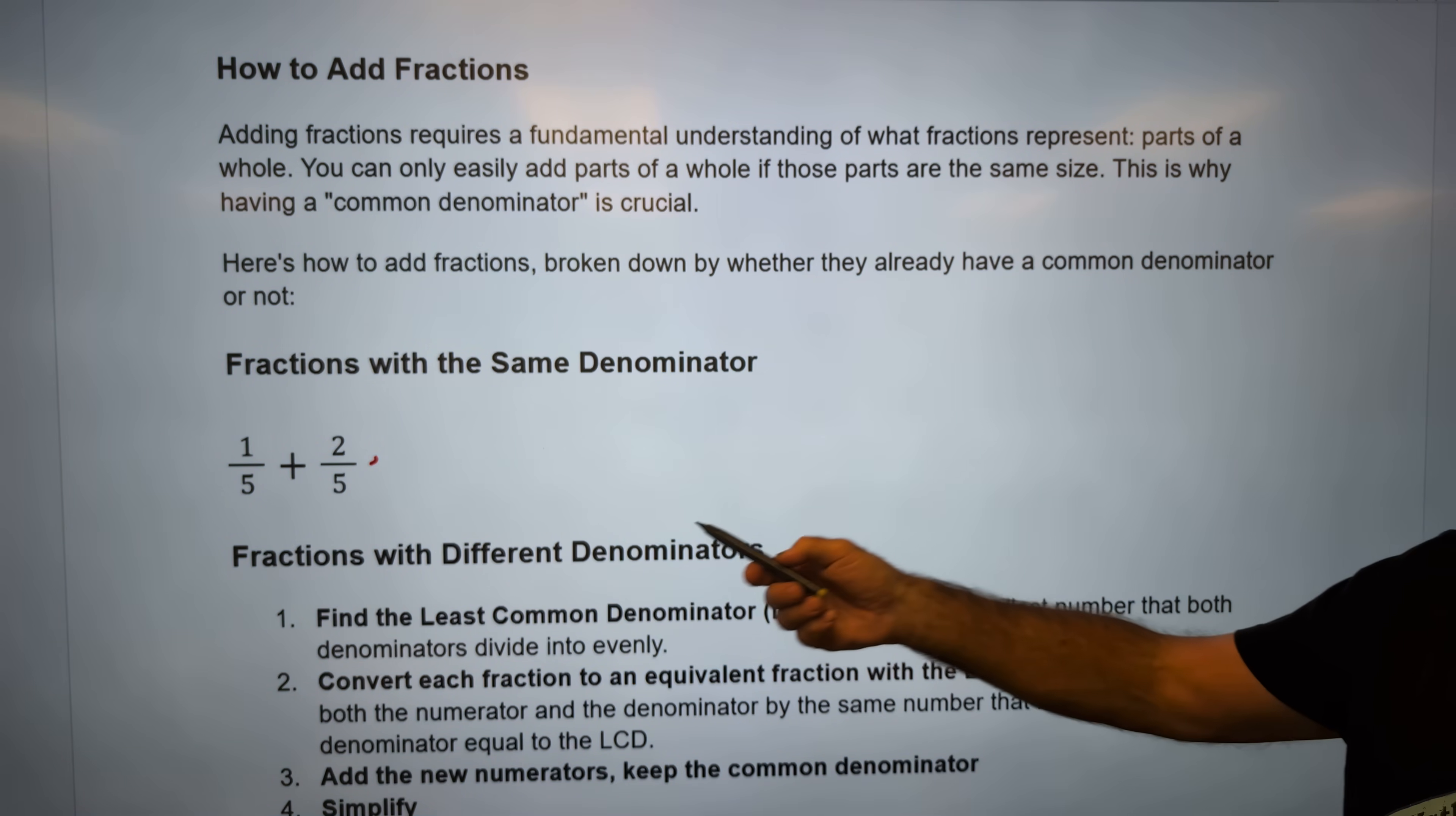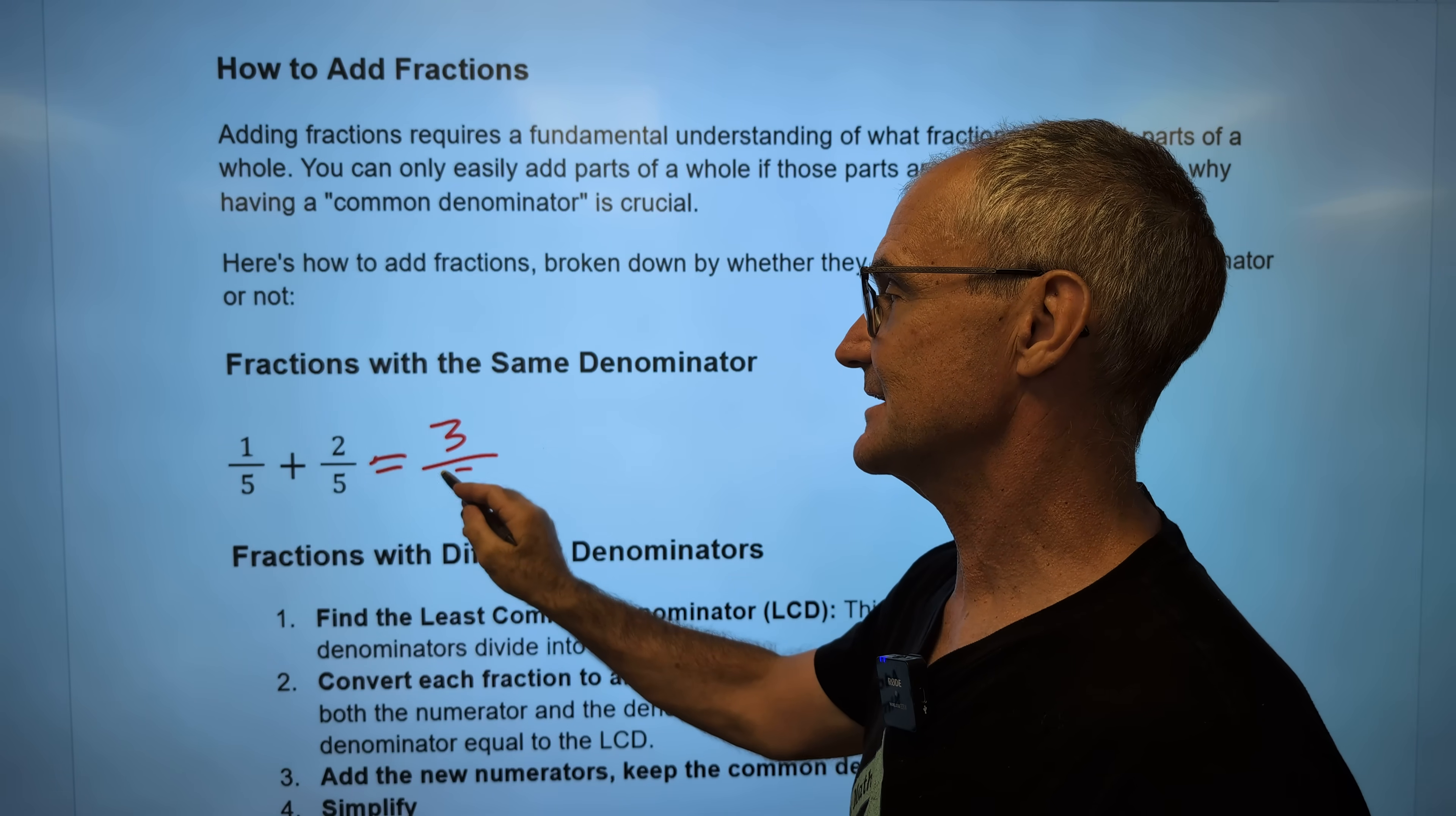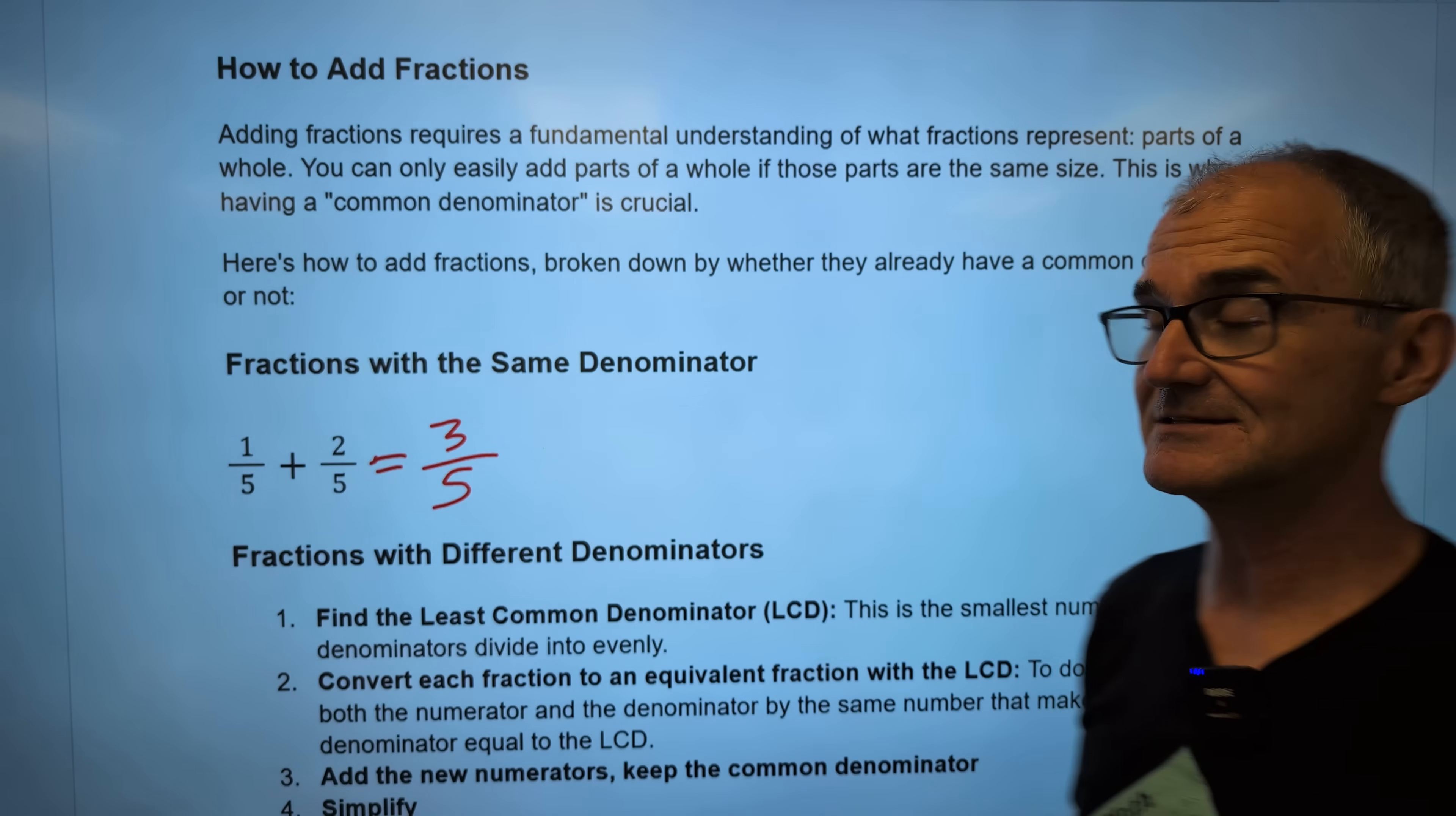Here's the first case scenario. If I have one-fifth plus two-fifths, I add right across the top to get three. I keep the bottom the same, fifths. So one-fifth plus two-fifths is three-fifths. That's how easy it is if the denominators are the same.